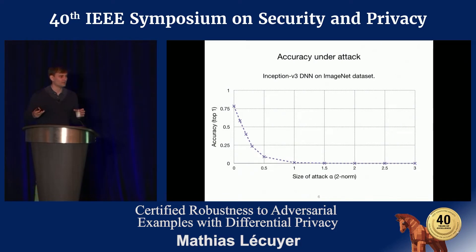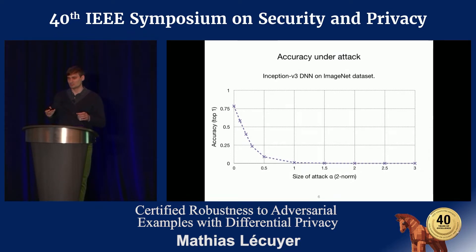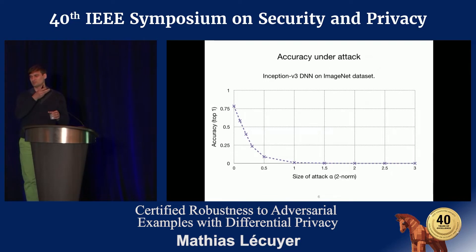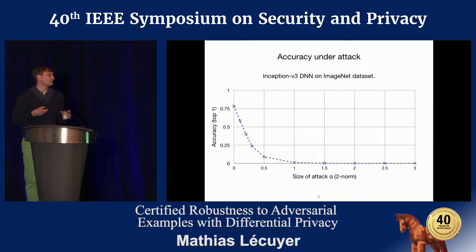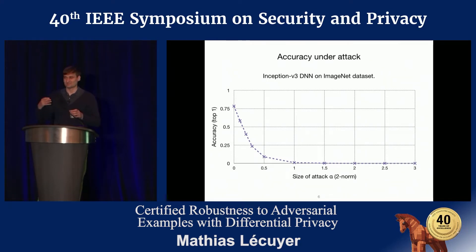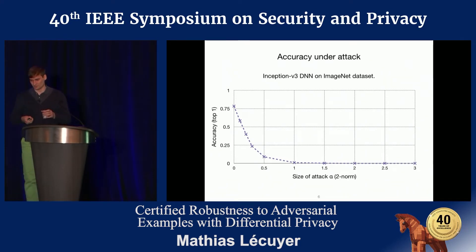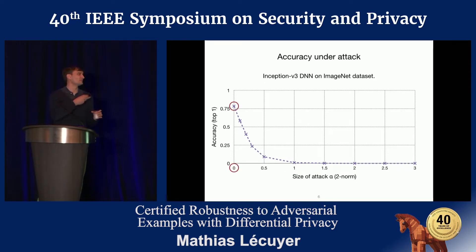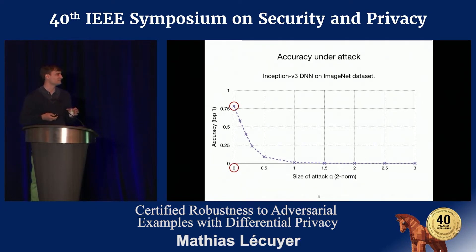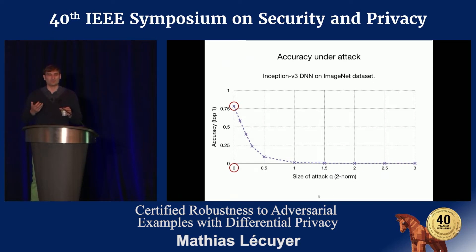I'm now recognized as the proud owner of ticket 2 and I'm granted access. This type of attack works really well against basically any input in many contexts. Here is an example using Google's ImageNet network — showing accuracy under an increasing size of adversarial attack. Under no attack the network has roughly 78% accuracy, which is pretty good for that dataset, but as soon as the attack starts the accuracy completely collapses.